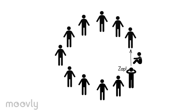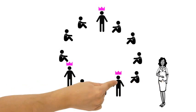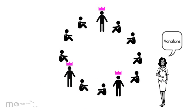For some this means that zap will be passed on to the one next to the one that's sitting. The match will be played until there are only three people left. The trainer guides the team and brings variations to the exercise — what kind of variations you can read below this video on YouTube.